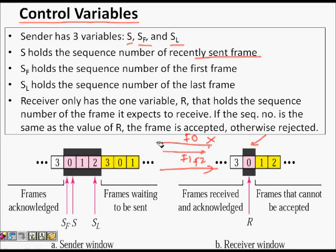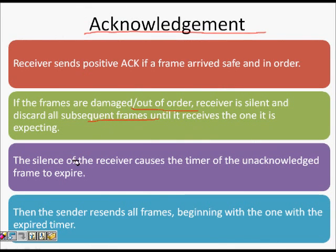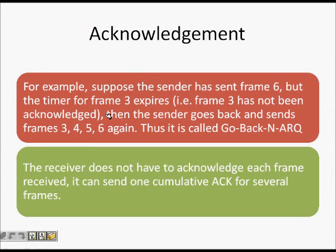The receiver only sends a positive acknowledgement when it has received a frame that is both safe and in order. If the receiver is expecting frame zero, it must receive frame zero - not frame three or frame one. If frames are damaged or out of order, the receiver is silent and discards all subsequent frames. If frame zero is lost, the receiver discards frames one and two silently. When the timer for frame zero expires, the sender retransmits it, and upon receiving it the receiver sends ACK one.